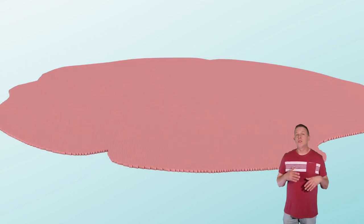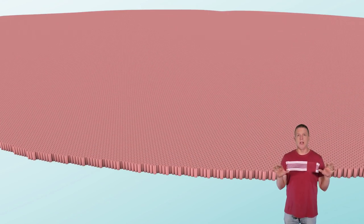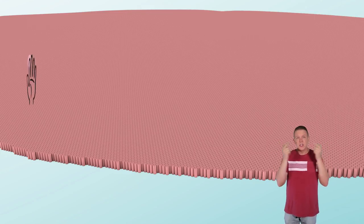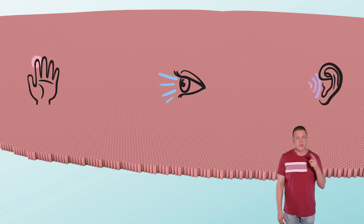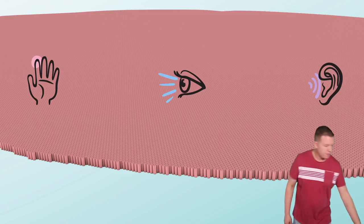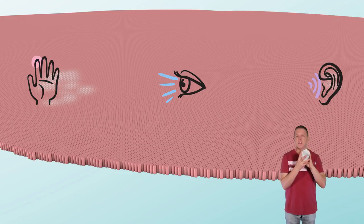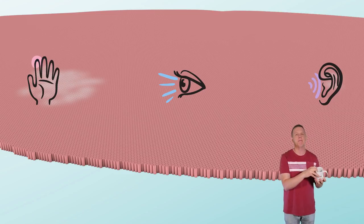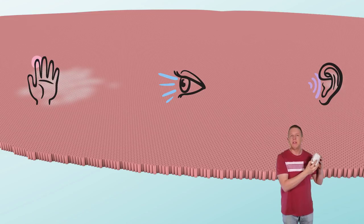Looking back at the cortical sheet, different groups of cortical columns are dedicated to processing different sensory modalities like touch, sight, and hearing. Every cortical column in your brain contributes to object representation. As you observe a coffee cup with your fingers, cortical columns are processing your sensations over time. Each touch and movement helps to define the object feature by feature in space.